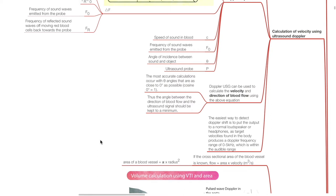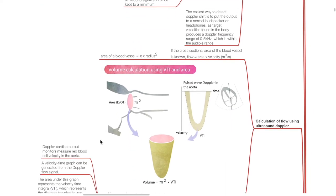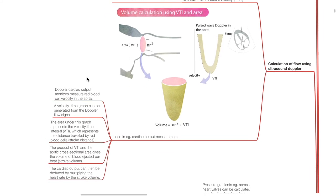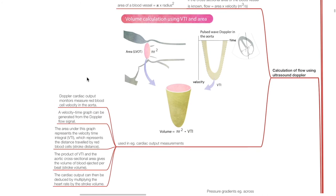The easiest way to detect Doppler shift is to put the output to a loudspeaker or headphones, as target velocities in the body produce a Doppler frequency range of 0 to 5 kHz, which is within the audible range. Calculation of flow: if the cross-sectional area of the blood vessel is known, flow equals area times velocity; area of a blood vessel equals π times radius squared. Doppler cardiac output monitors measure red blood cell velocity in the aorta. A velocity-time graph can be generated from the Doppler flow signal; the area under this graph represents the velocity time integral (VTI), which represents the stroke distance. The product of VTI and the aortic cross-sectional area gives the stroke volume, and cardiac output can be deduced by multiplying heart rate by stroke volume. Pressure gradients across heart valves can be calculated using the Bernoulli equation: ΔP = 4 × V², where ΔP is the pressure gradient and V is the velocity of blood.